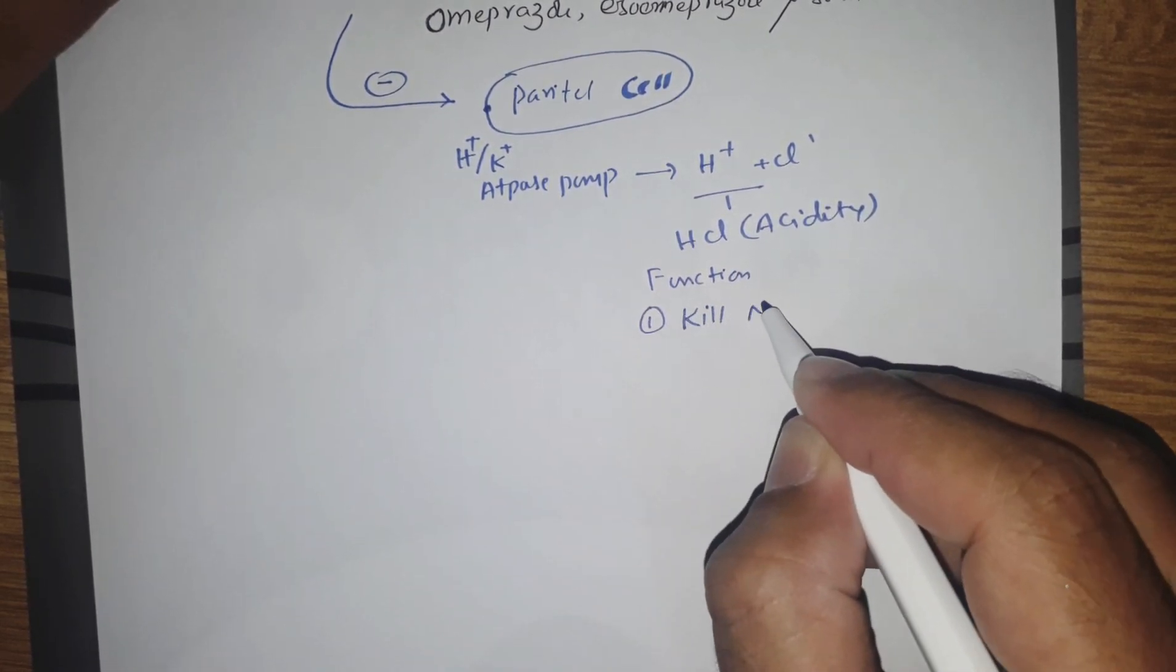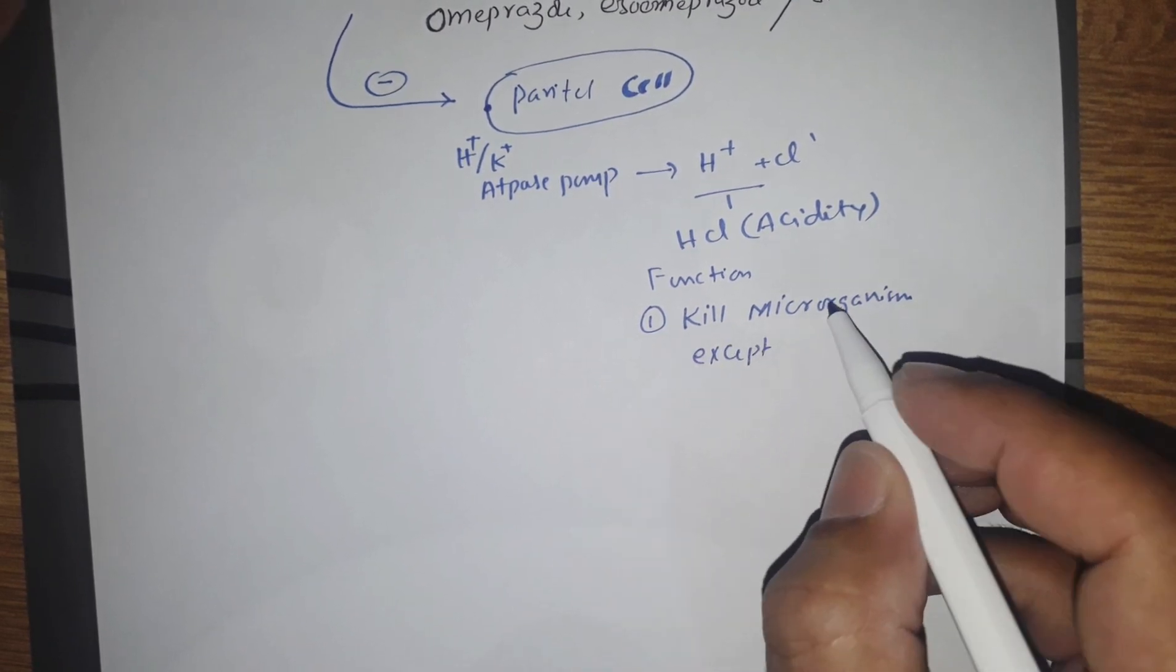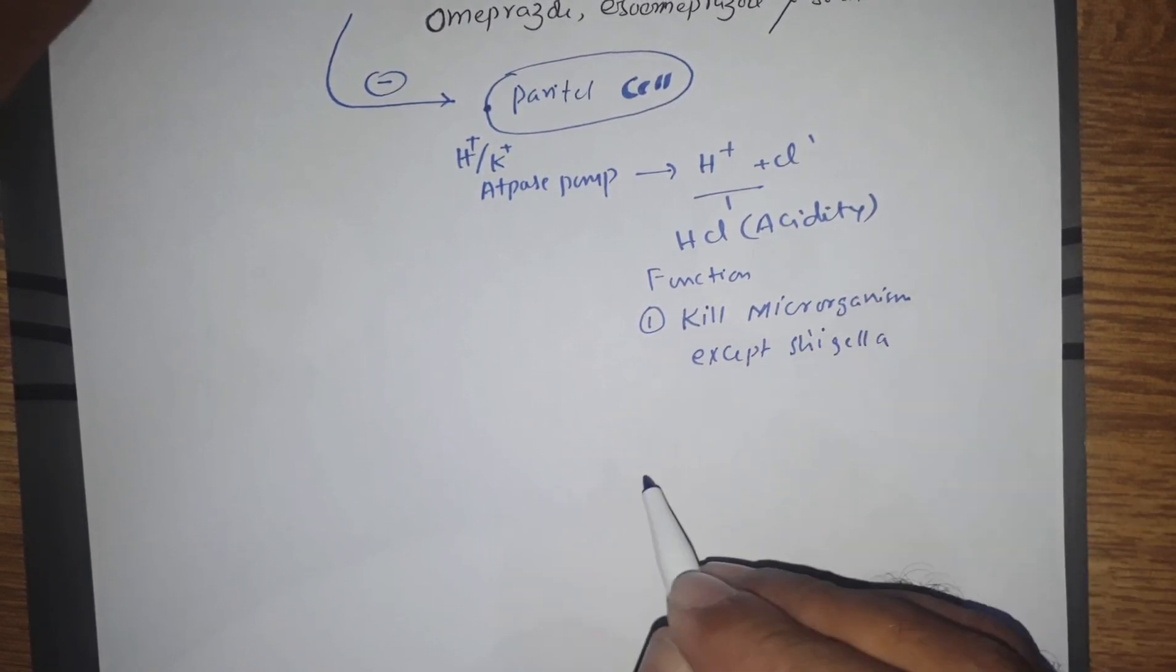The first function is that it kills any microorganism except Shigella. So we have to know that Shigella is resistant to stomach acidity.